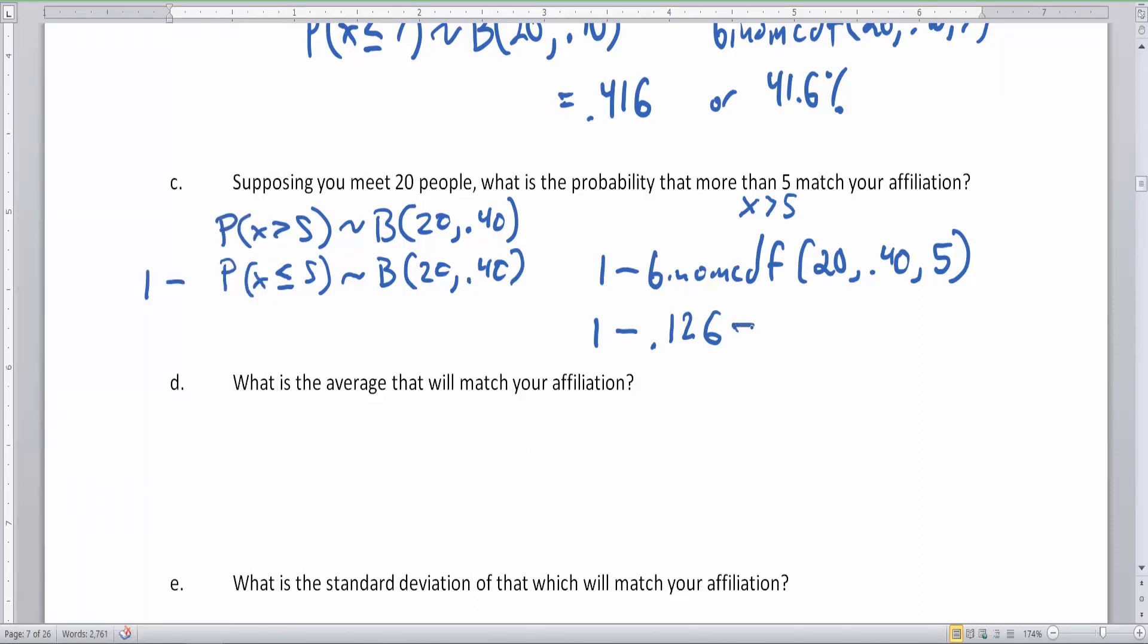I get to write that down. 0.874. That means 87.4% chance that more than five, that means six, seven, eight, nine, 10, 11, 12, 13, 14, 15, and 16 people will match your political affiliation. So you're going to please the crowd, but you still have a good chance of making people upset.